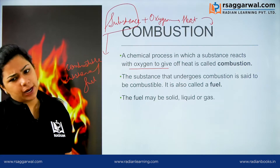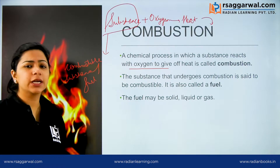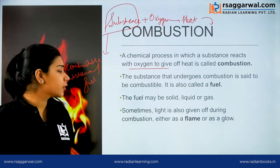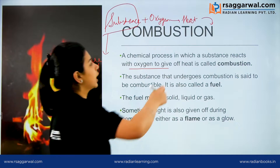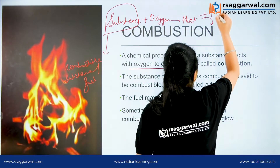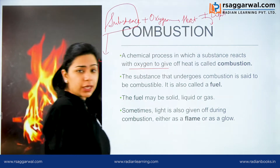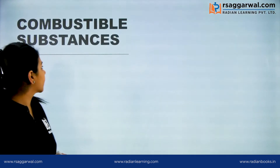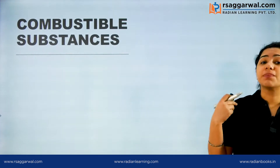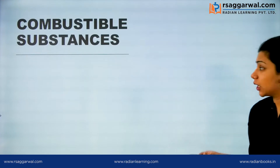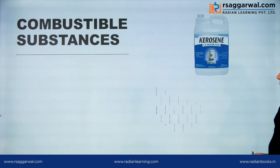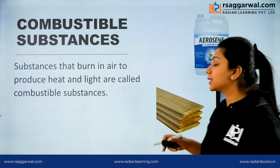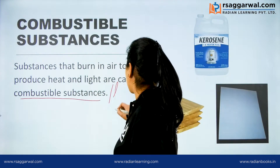The fuel may be solid, liquid, or gas. Sometimes light is also given off during combustion, either as a flame or as a glow — so heat plus light comes here. But this light is not always necessary. Those substances which burn — we call them combustible substances, like kerosene, wood, paper. Substances that produce heat and light are called combustible substances or fuel.